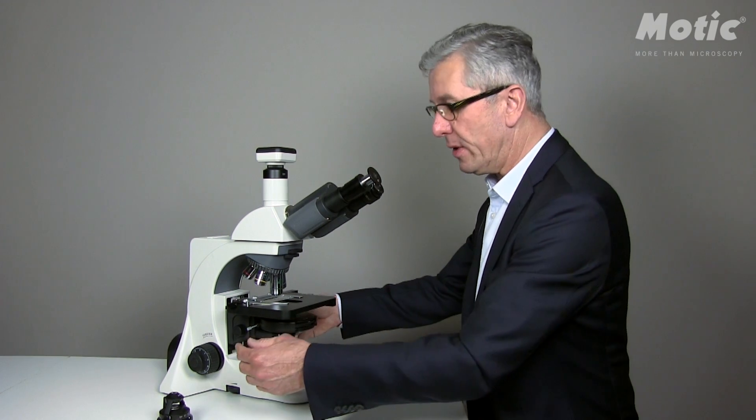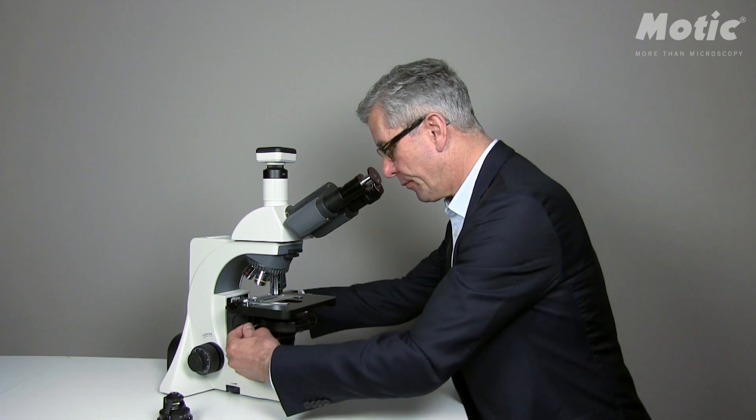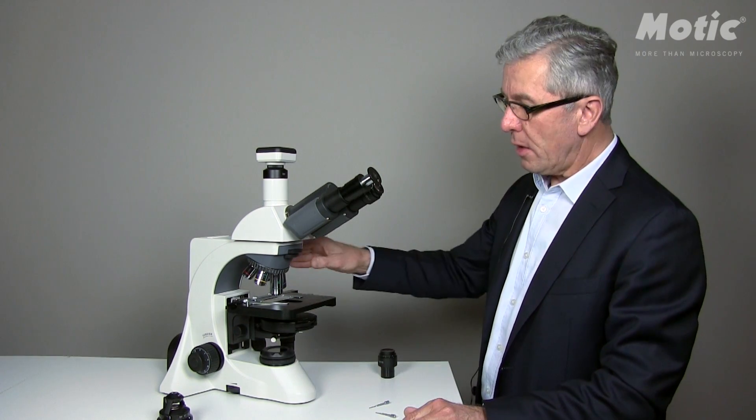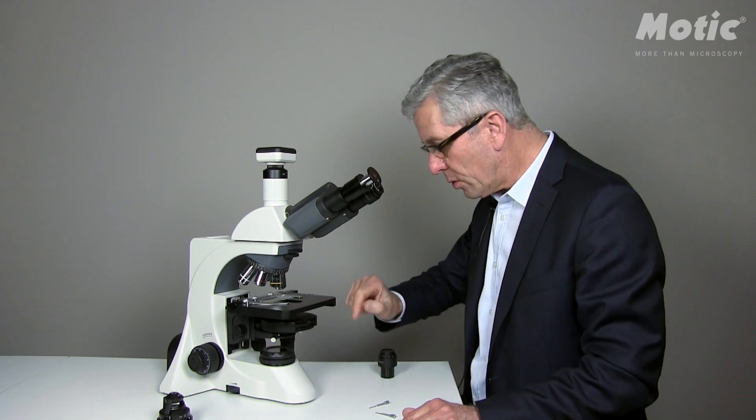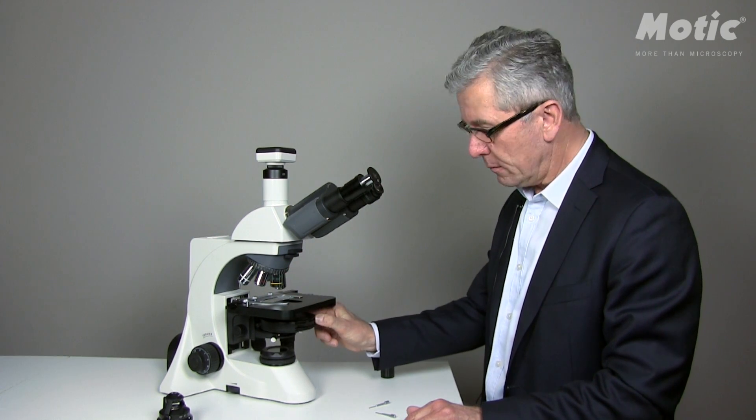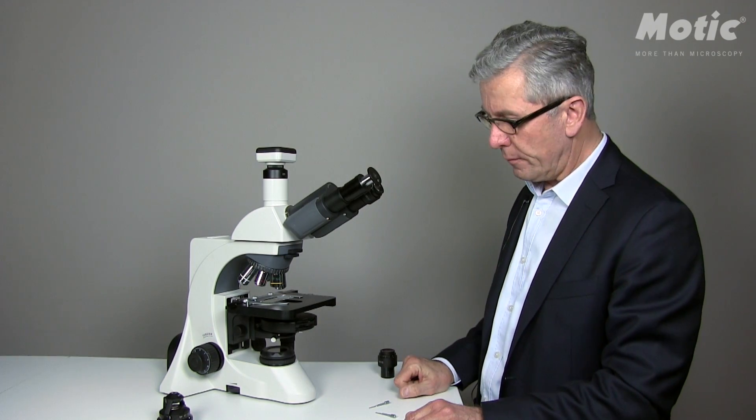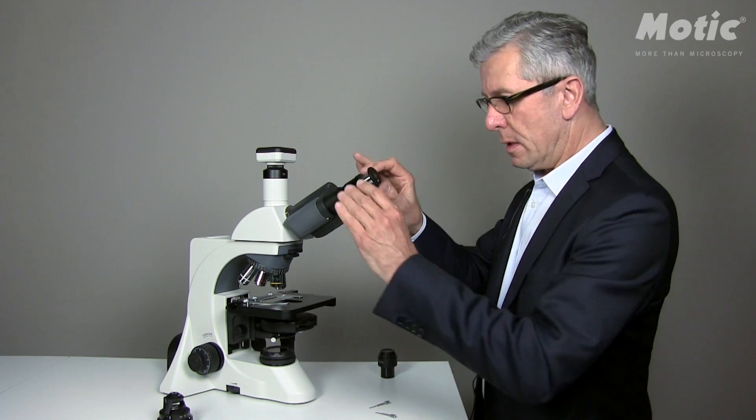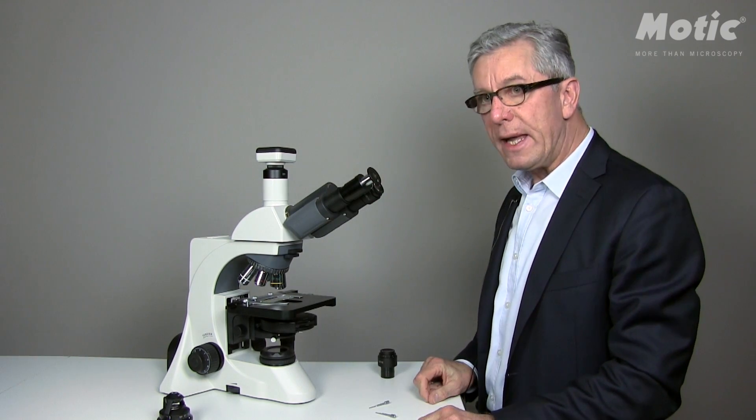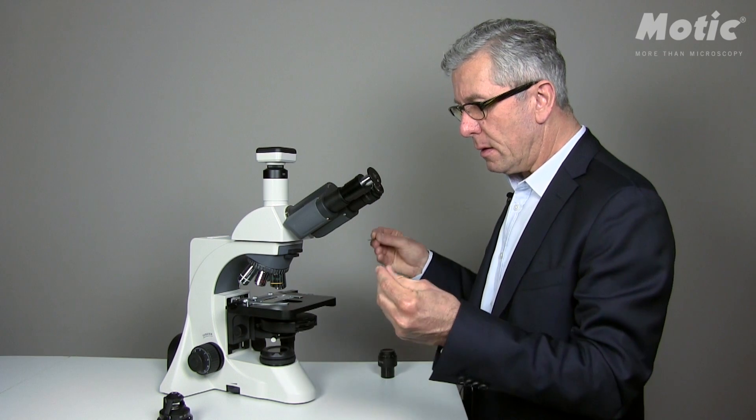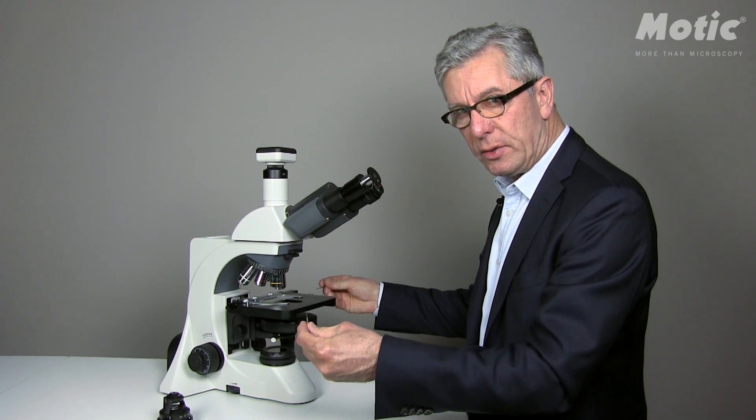So please take out the centering keys first, swing in the next objective and choose the correct illumination ring. Please refocus in order to see both rings clearly. And again, fine adjustment has to be done by the centering keys.